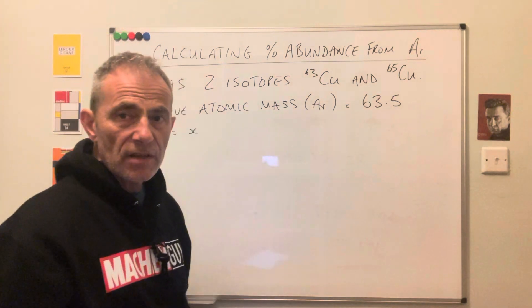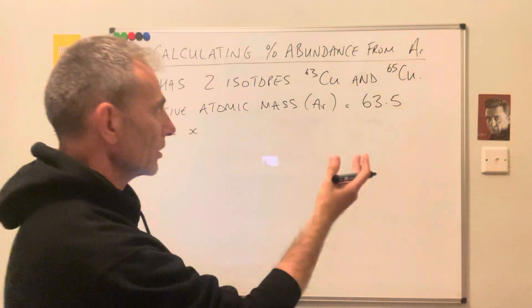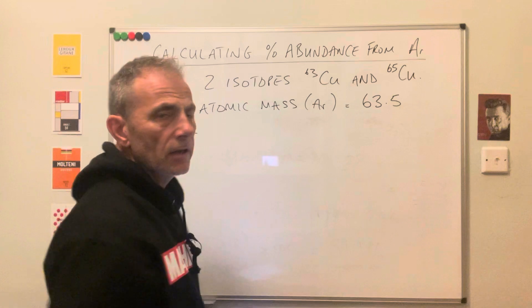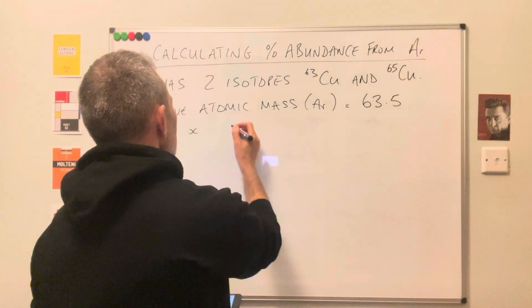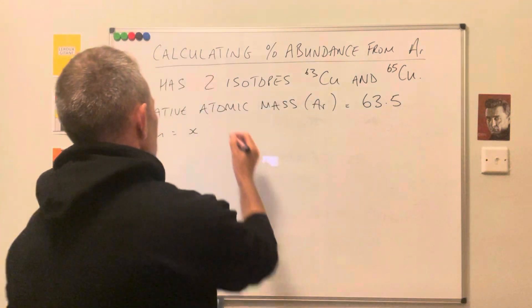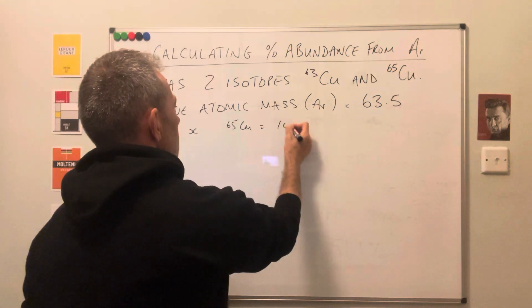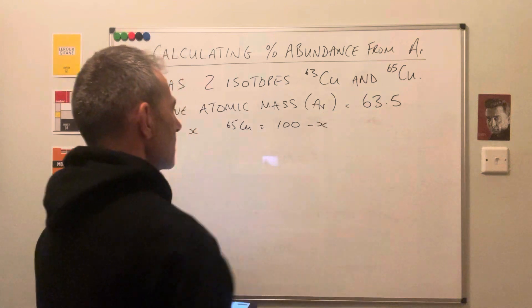Now remember, percentages add up to 100, so we've only got two isotopes, so the 65 abundance is going to be 100 minus x. So ⁶⁵Cu equals 100 minus x.